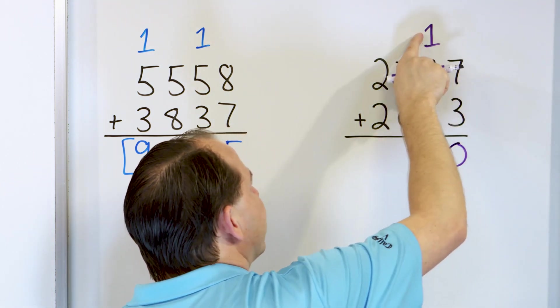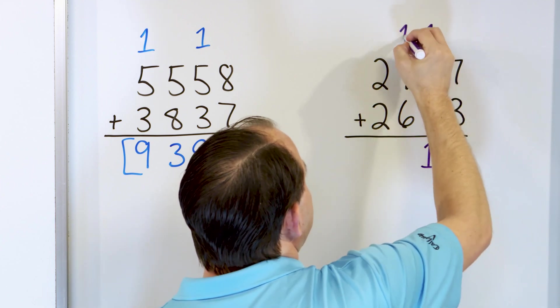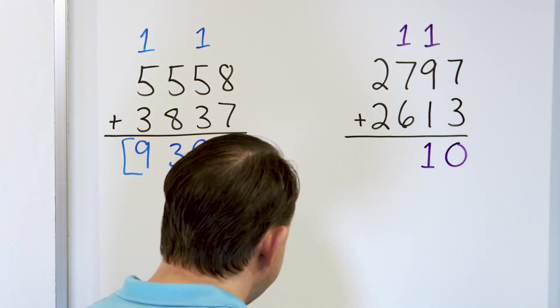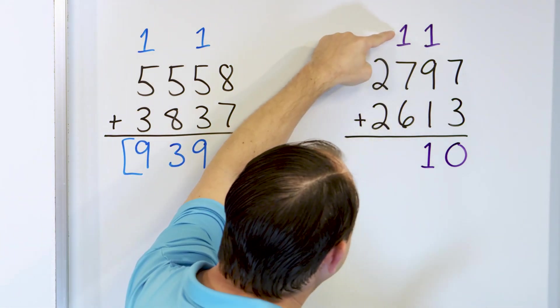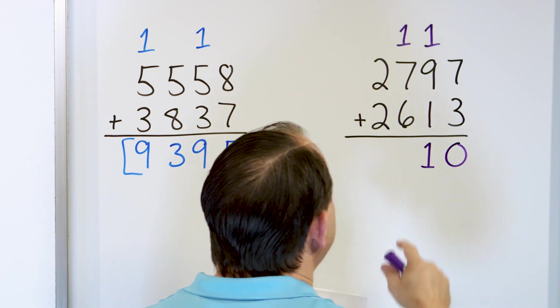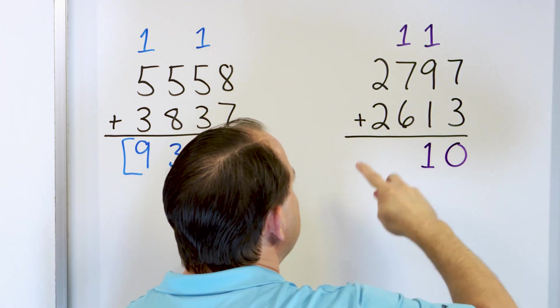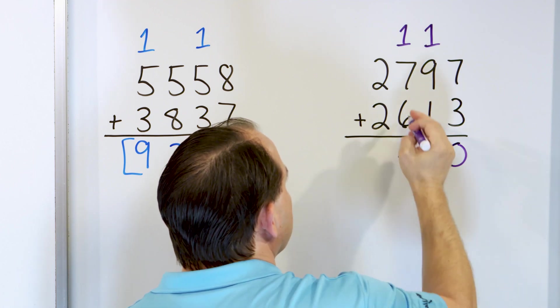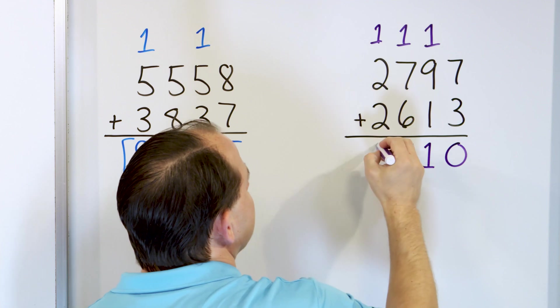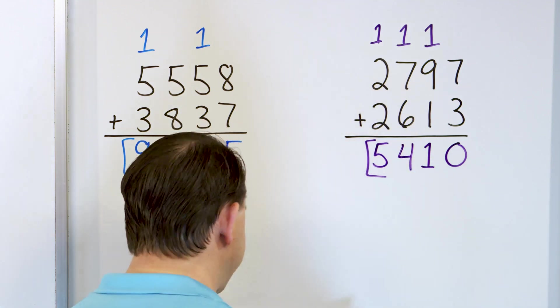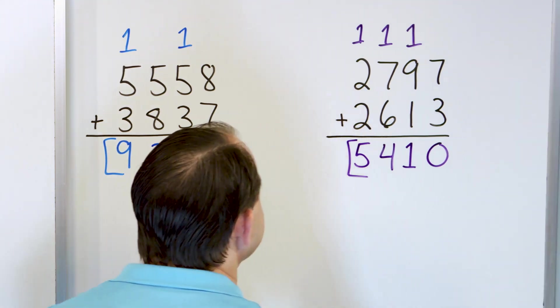Then we have 9 plus 1 is 10, plus 1 more is 11. We'll write that as a 1 down here. Carry the 1. That's the 11. And there's a couple of different ways you can add this. But let's just start by saying 7. Then we have 8. And then we need to add these. So we have 8. Here we go. 9, 10, 11, 12, 13, 14. 14 we write as a 4. Carry the 1 here. 2 plus 2 is 4. Plus 1 is 5. The answer is 5,410.